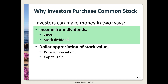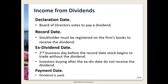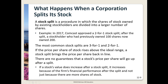As an investor in common stock we can expect to make money in two ways: cash and capital gains. Cash can come in the form of cash or stock dividends; capital gains is the increase in the stock price. A firm does not have to pay dividends, and young firms rarely do. Once a firm begins to pay dividends, they tend to continue and investors expect them to grow. Dividends are typically paid quarterly. There are four important dates: the declaration date, the record date, the ex-dividend date (the second business day before the record date), and the payment date.